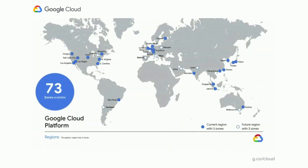We show this map every year, and every year it just keeps growing in terms of the number of zones and regions that are available. Cloud SQL is available in all these regions, and SQL Server is no different. You're able to have Cloud SQL for SQL Server in any of the regions that GCP is expanding to, and this map will just continue to fill out as GCP continues its growth.